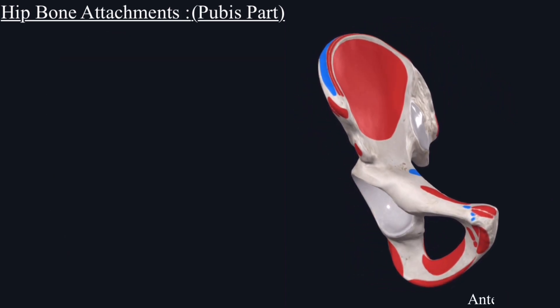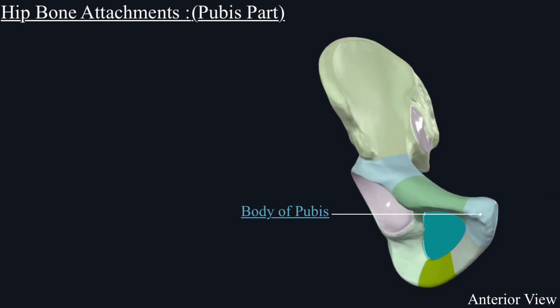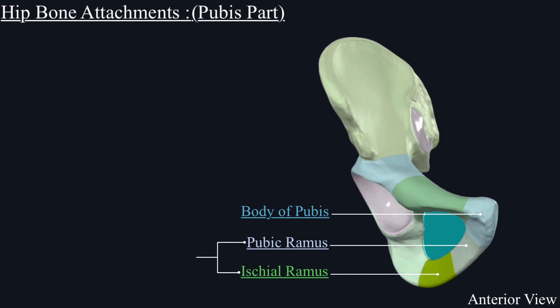To better understand the muscles' origin and insertion on the pubic part, we will first discuss the basic landmarks. The pubic bone has a body, and close to the body is a ramus called the pubic ramus. This pubic ramus is continuous with the ramus of the ischium. Together, these two rami are called the ischiopubic ramus.